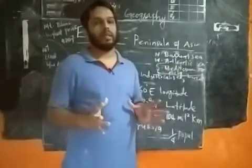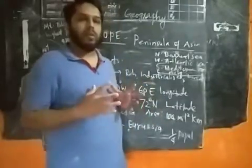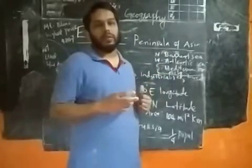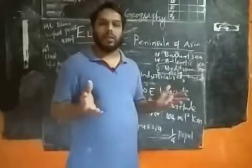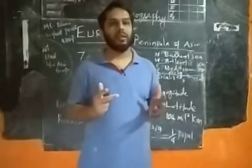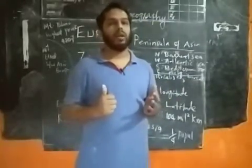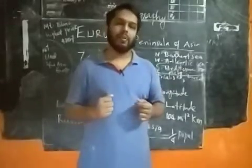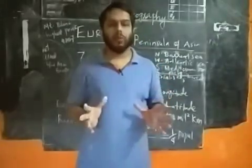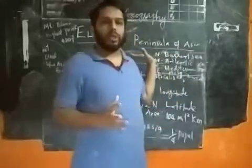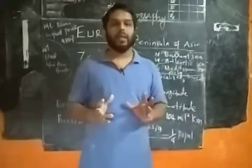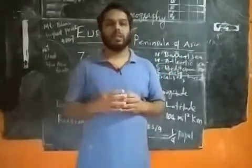There are seven continents in the world, and out of these seven continents, Europe is the sixth largest continent. The seven continents of the world are Asia, Africa, North America, South America, Europe, Australia, and Antarctica. Europe is in the sixth position in terms of size, and it is a very small continent.